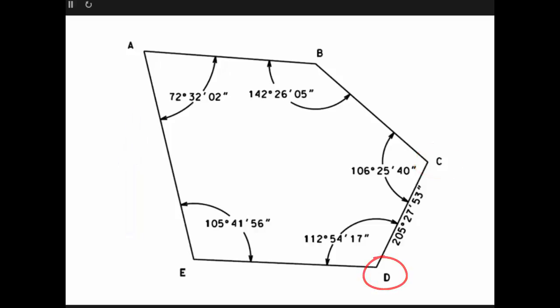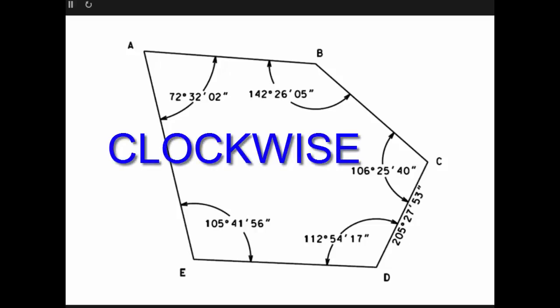Since we're starting from C and moving toward D, the next letter in the sequence on this loop would be E, followed by A, then B, and then back to C. So when we go from C to D, E, A, B, and back to C, we are moving clockwise around this loop.